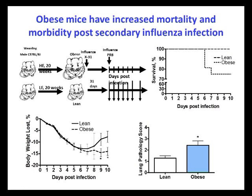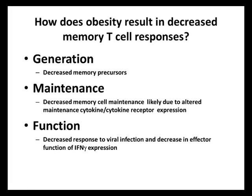Following a secondary flu infection, lean mice were 100% protected from mortality from the PR8 influenza infection. However, approximately 25% of the obese mice died. Weight loss, as an indicator of the severity of infection, was also greater in the obese mice, and their lung pathology was more severe. To explain these differences, we looked at three different aspects of immune memory: generation, maintenance, and function.